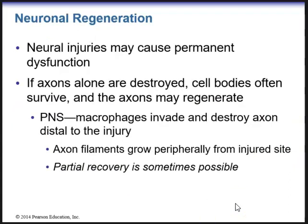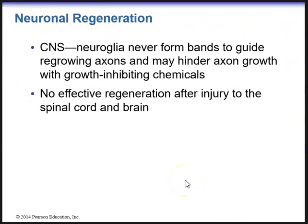With regards to neural injuries, neural injuries may cause permanent dysfunction. If axons alone are destroyed, cell bodies often survive and the axons may regenerate. Within the peripheral nervous system, macrophages will invade and destroy axons distal to the injury, and then axon filaments can grow peripherally from the injured site, so partial recovery is sometimes possible. In the central nervous system, however, neuroglia never form bands to guide regrowing axons and may actually hinder axon growth with growth-inhibiting chemicals, so there is no effective regeneration after injury to the spinal cord and brain.